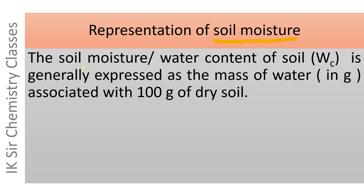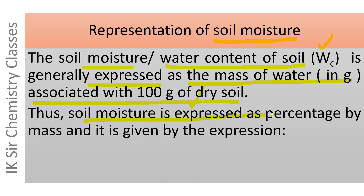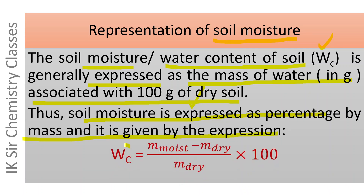Soil moisture, that is the water content of soil, abbreviated as WC, is generally expressed as the mass of water in grams associated with 100 grams of dry soil. Soil moisture is expressed as a percentage by mass and is given by: water content of soil = (mass of moist soil − mass of dry soil) ÷ mass of dry soil × 100.